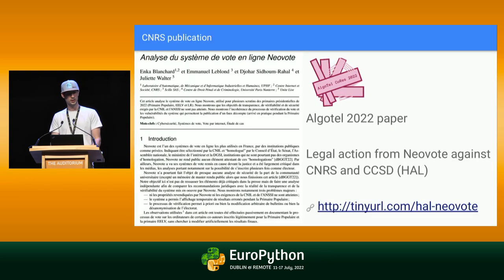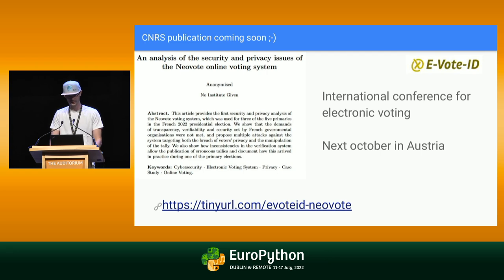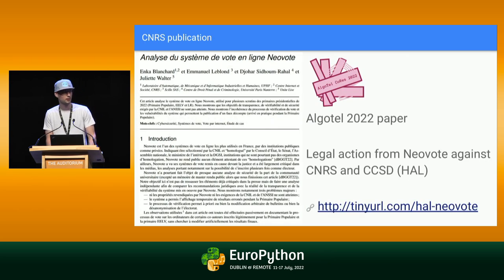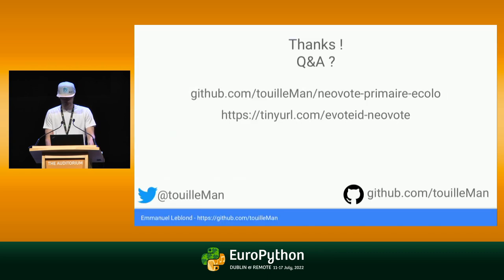I talked about the CNRS publication in Algotel — great if you're French-speaking, but not if you're an English speaker. Don't worry: there is a new conference coming in Austria, and there is a paper in English. If you want to read the anonymized preprints, you can. It's still done by Enka, who has done an incredible job on this. If you're Austrian, you should check it out. I think I'm done.